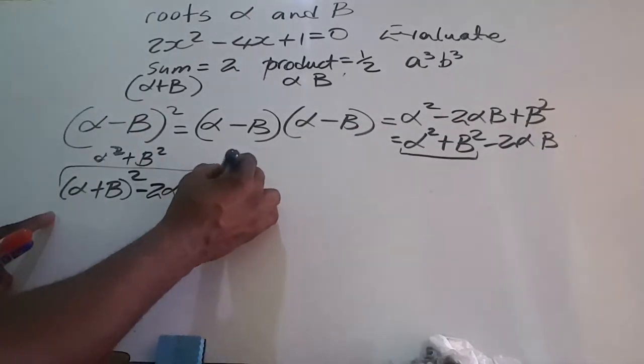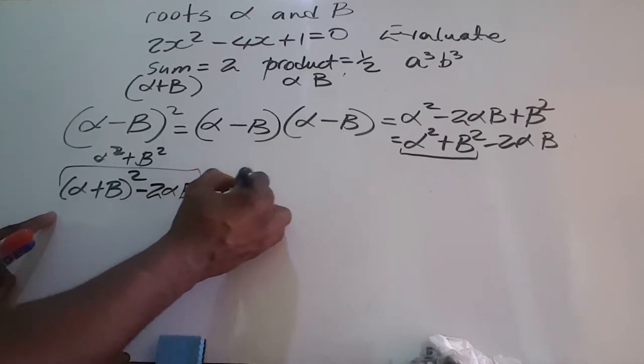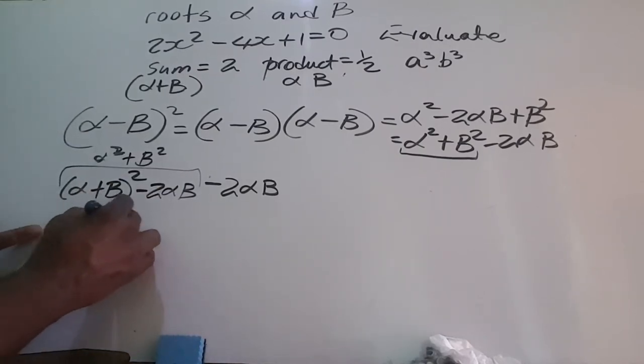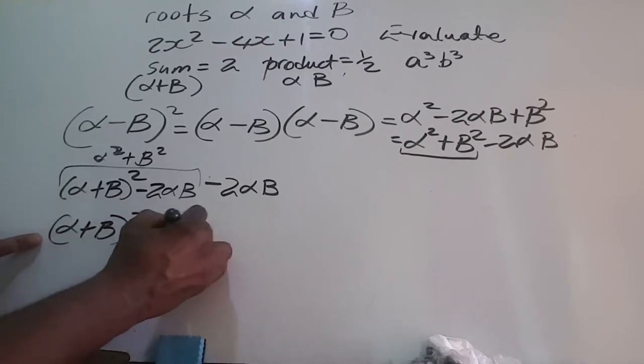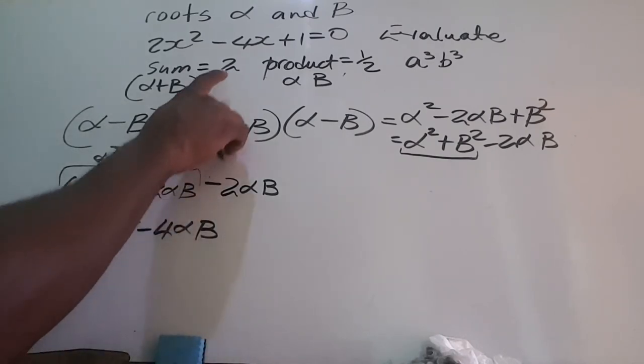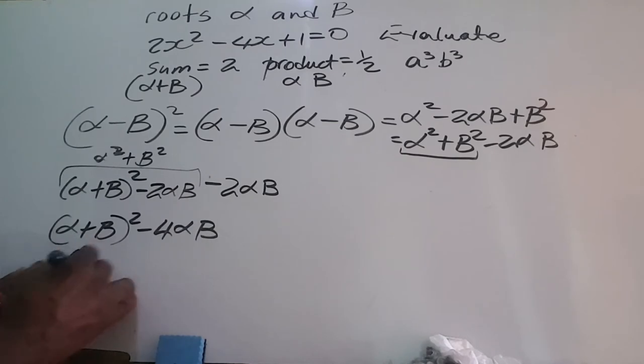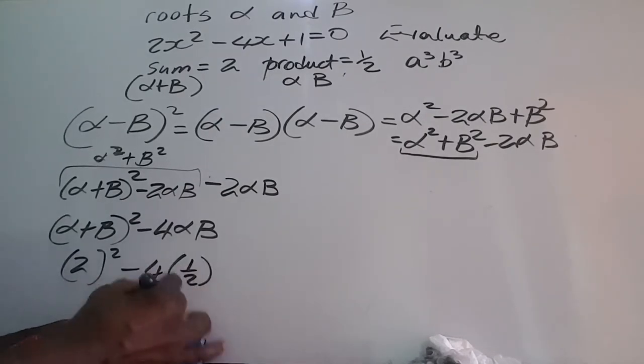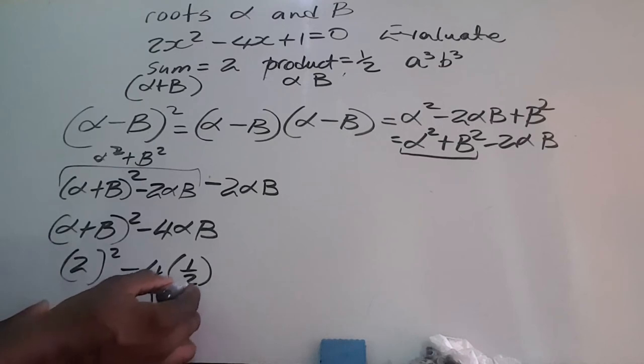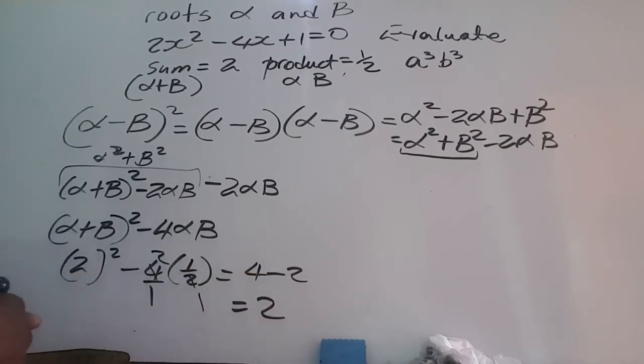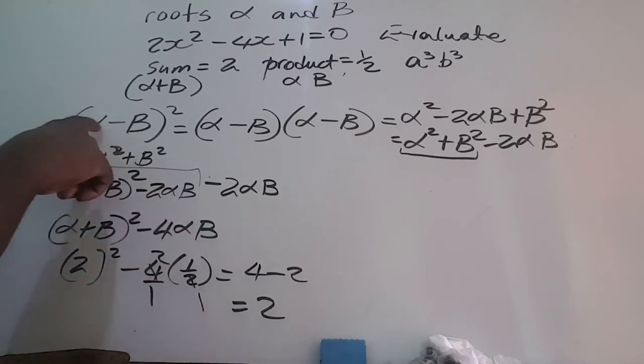So finalizing this, we're looking at alpha plus beta all squared minus 4 alpha beta. We have sums and products now. The sum is 2, so 2 squared minus 4 times the product, which is a half. We have some canceling, and the bottom line is we have 4 minus 2 which equals 2.